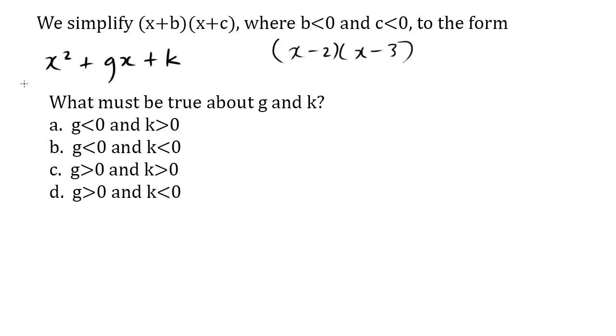To the form, this here is the expanded form of this, of these factors multiplied. Now we know the k value is the L part of FOIL. First, outside, inside, last.